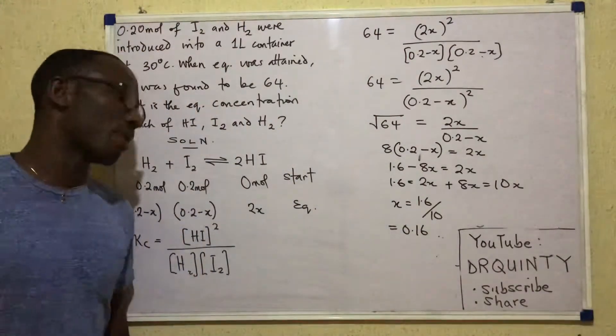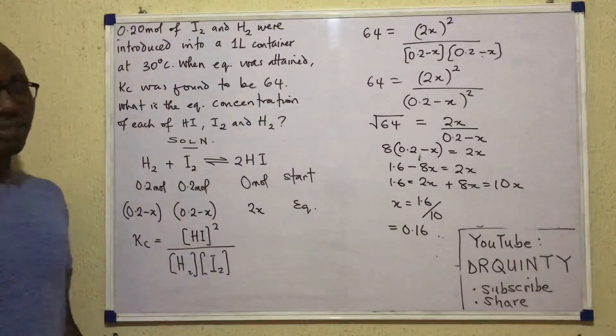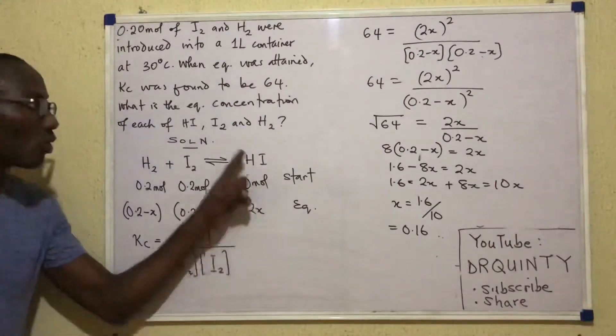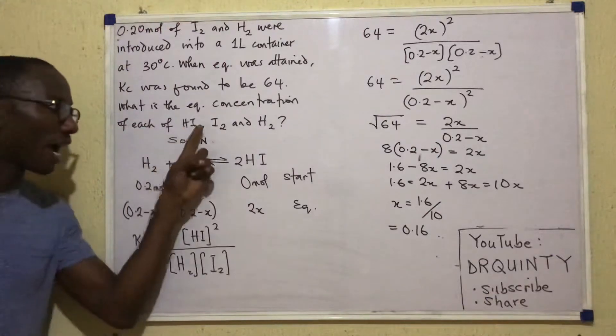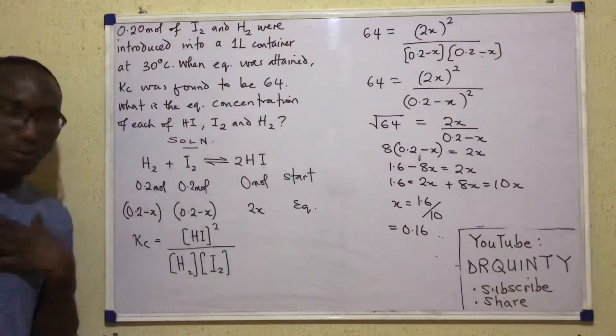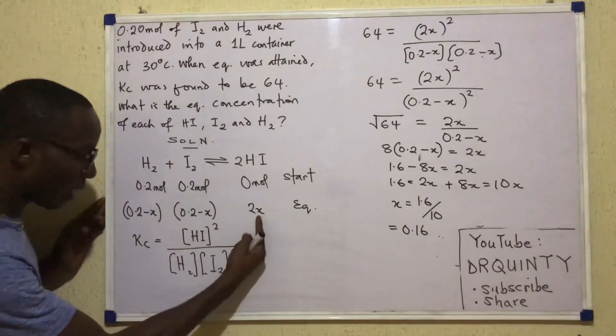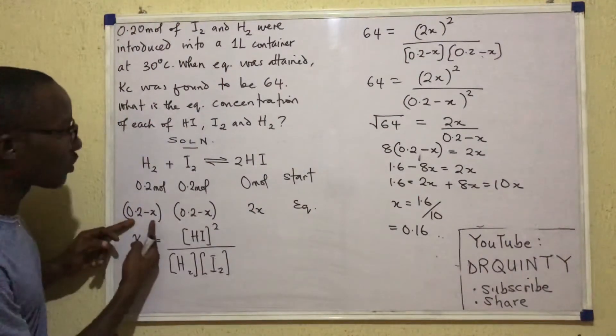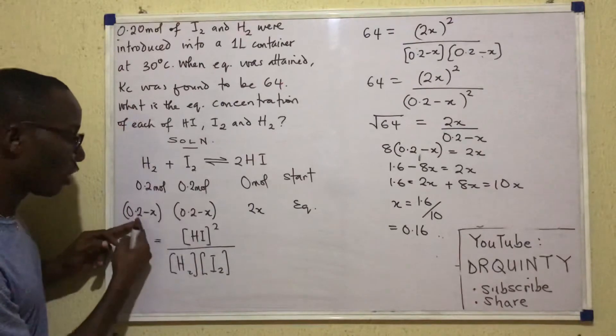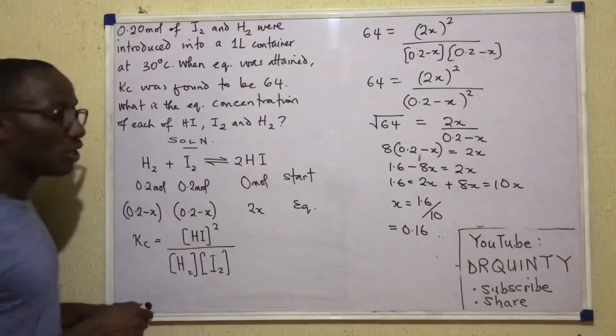So I've obtained my X but that's not my answer. The equilibrium concentrations of HI, I2 and H2 is what I was asked to calculate. And in this equation, I'm seeing them as 2X, 0.2 minus X, and 0.2 minus X.